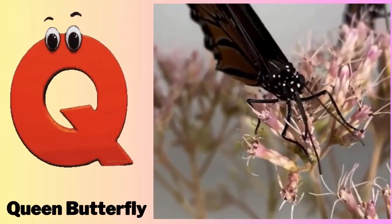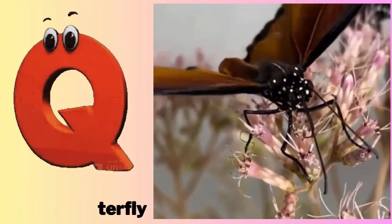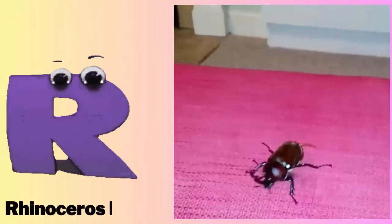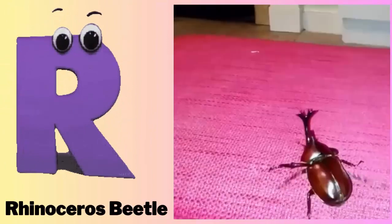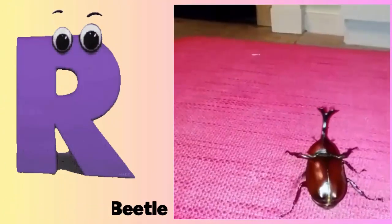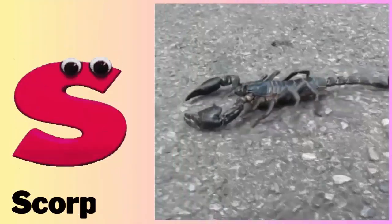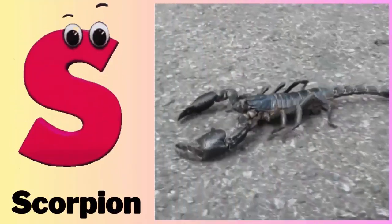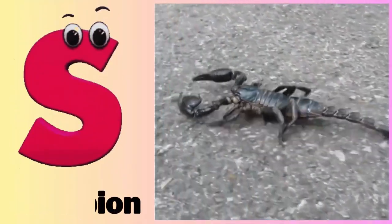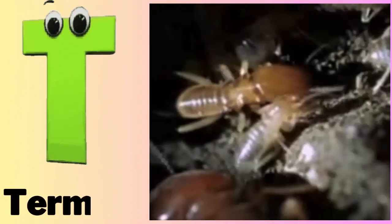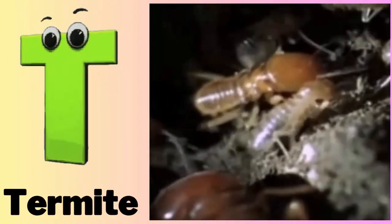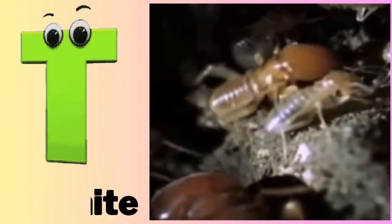Q - Q for Queen Butterfly. R - R for Rhinoceros Beetle. S - S for Scorpion. T - T for Termite.